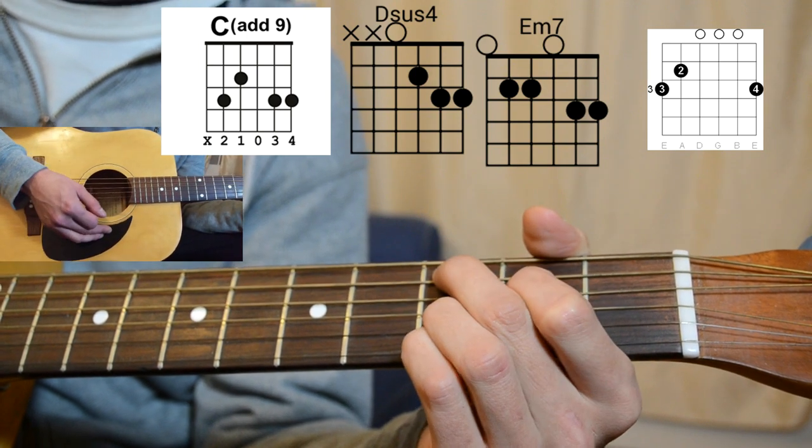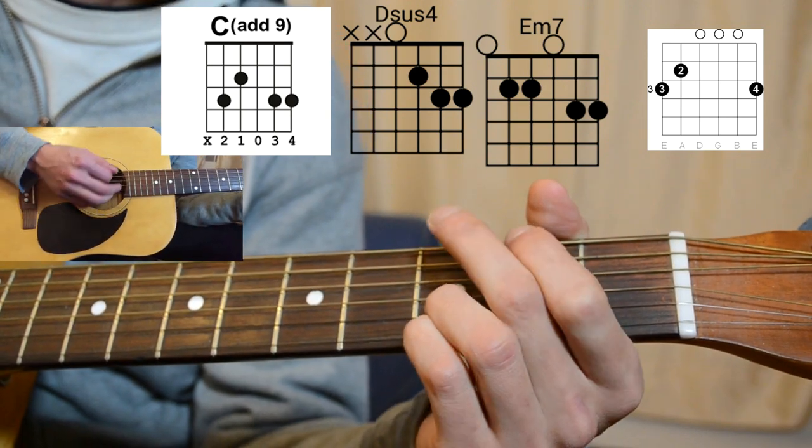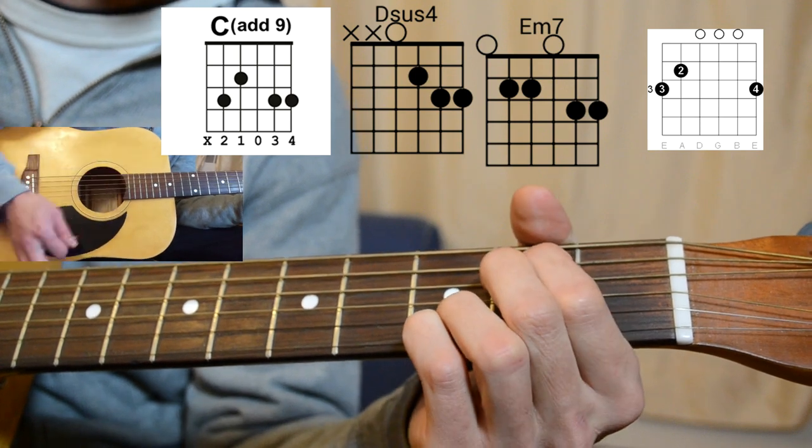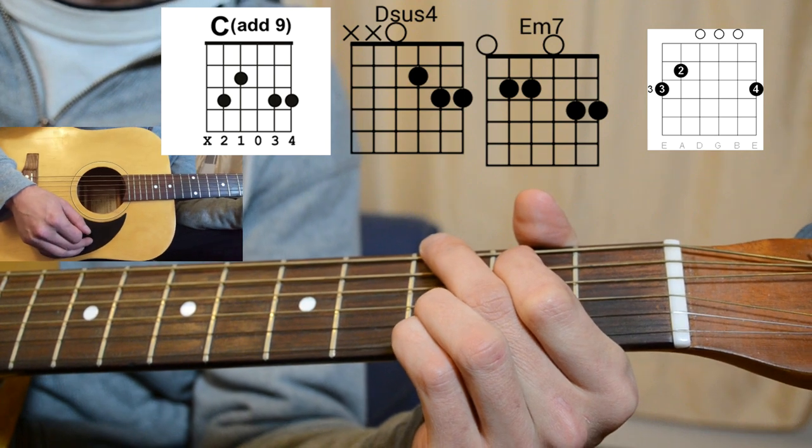So again, E minor 7, C add 9, Dsus 4, to your E minor 7, to your G. The whole song.